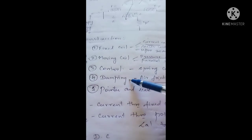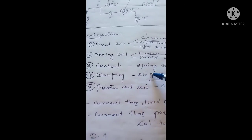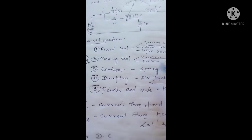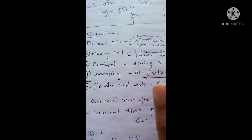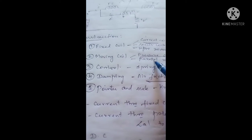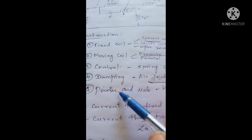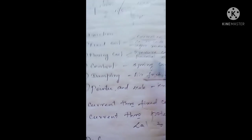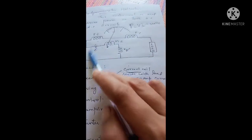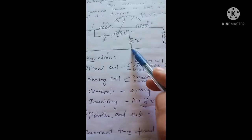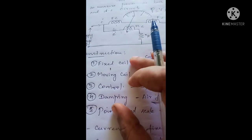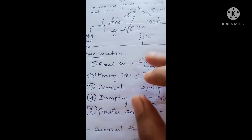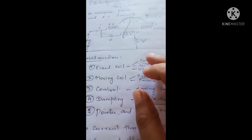We make use of spring arrangement to provide an opposing force to the deflecting force. For damping, we use air friction damping to stop the oscillation of the pointer. We have a knife-edge pointer and mirror-based scale for representing the power developed in the circuit.